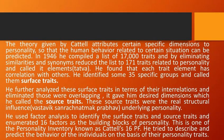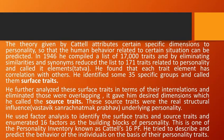He found that each trait element has a correlation with others. He identified some 35 specific groups and called them surface traits. He further analyzed these surface traits in terms of their interrelations and eliminated those that were overlapping. This gave him desired dimensions which he called source traits. These source traits were the real structural influence underlying personality. He used factor analysis to identify the surface and source traits and enumerated 16 factors as the building blocks of personality. This is one of the personality inventories known as Cattell's 16PF. He tried to describe and predict the behavior of individuals on the basis of their personality traits.